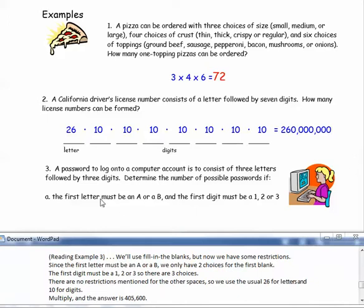Example 3: A password to log on to a computer account is to consist of three letters followed by three digits. Determine the number of possible passwords if the first letter must be an A or a B, and the first digit must be a one, two, or three. We'll still use fill-in-the-blanks, but now we have some restrictions.